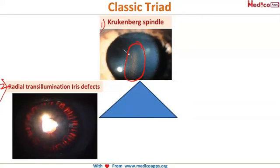At these orange lines, the iris is deficient in pigment, so light is able to pass through easily — these are the radial transillumination defects. They are called 'radial' because of their radial distribution, as you can see. Please remember: radial transillumination defects are characteristic of pigmentary glaucoma.